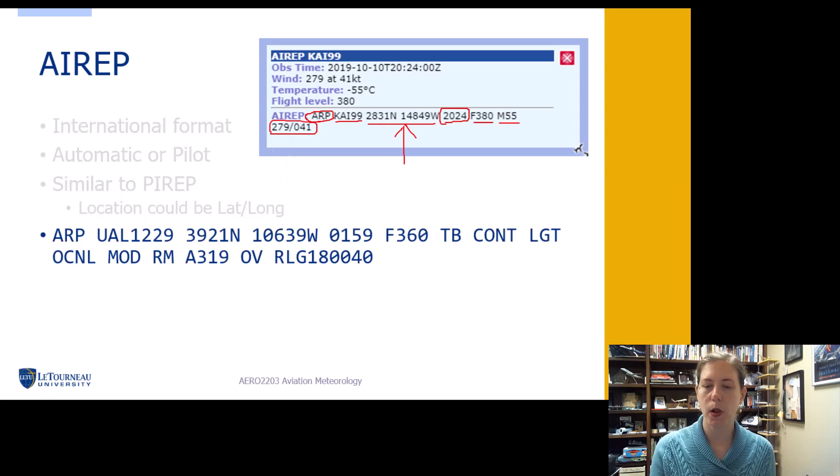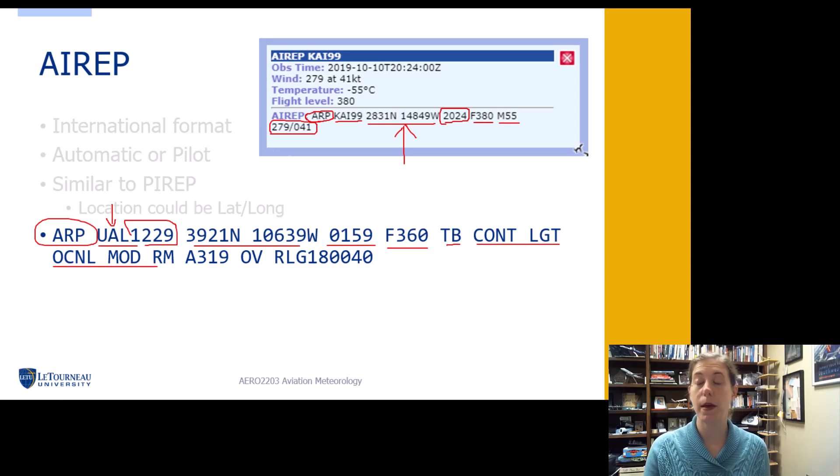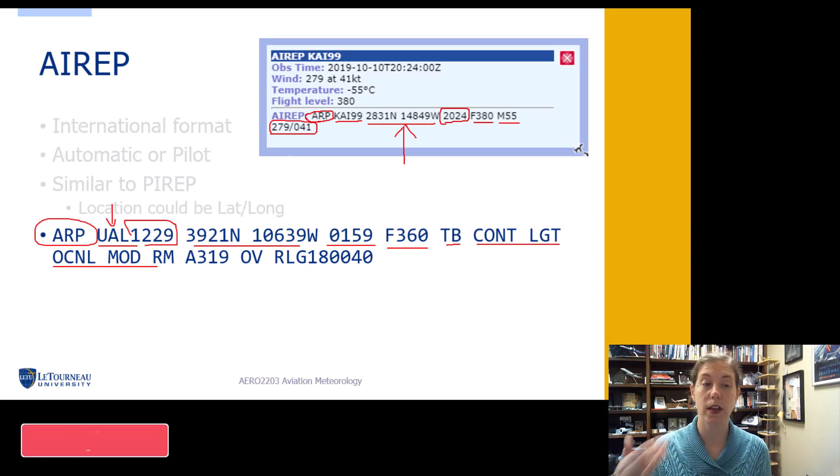Here's another example of one. So here we have United Airlines flight 1229. Notice we're not a UA because we're not an unidentified aviator, we are identified. We're United flight 1229. Got our location here, the time, the altitude, turbulence, continuous light, occasional moderate. Now this is most likely been augmented by a person to add this occasional moderate, to actually add that turbulence qualifier.